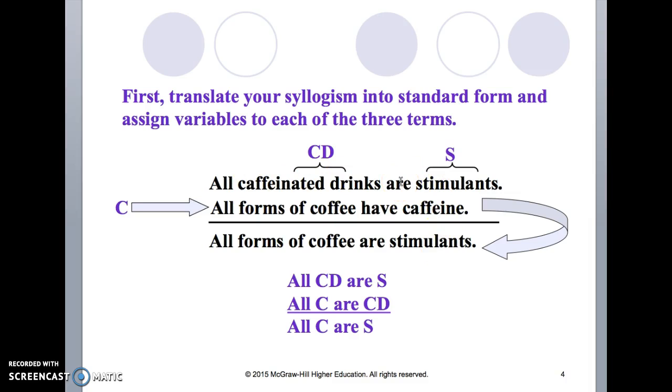The predicate in the conclusion appears up here in the first premise on the top, this is the major premise. The word that appears two times in the premises but nowhere in the conclusion is the middle term.